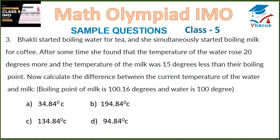Question number 3: Bhakti started boiling water for tea and simultaneously started boiling milk for coffee. After some time, she found that the temperature of water rose 20 degrees more and the temperature of the milk was 15 degrees less than their boiling point. Calculate the difference between the current temperature of water and milk. The boiling point of milk is 100.16 degrees and water is 100 degrees.